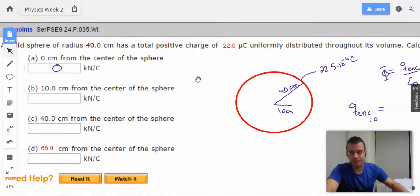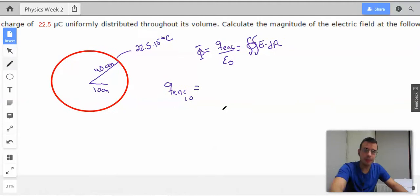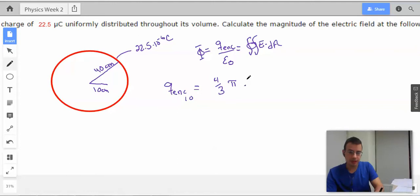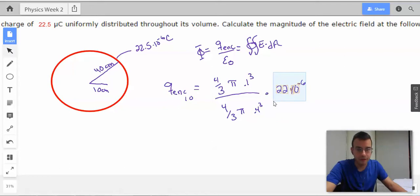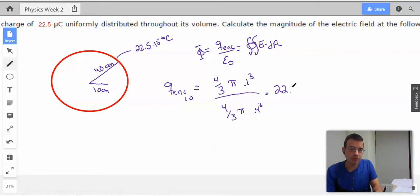The volume of the 40 centimeter radius. It's radius, right? Did I say diameter? Yeah, radius. And that will be dividing the volume of the 10 centimeter circle. So volume is 4 thirds pi r cubed. In this case, it will be 0.1 cubed divided by 4 thirds pi 0.4 cubed. And then we're going to multiply this by the total q that we have. So what this does is it gives us a ratio.